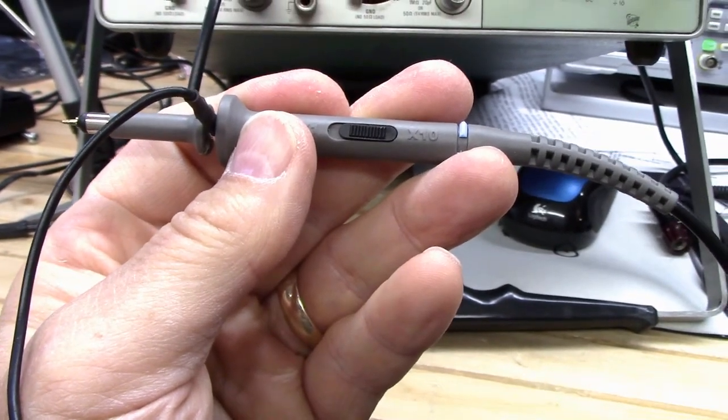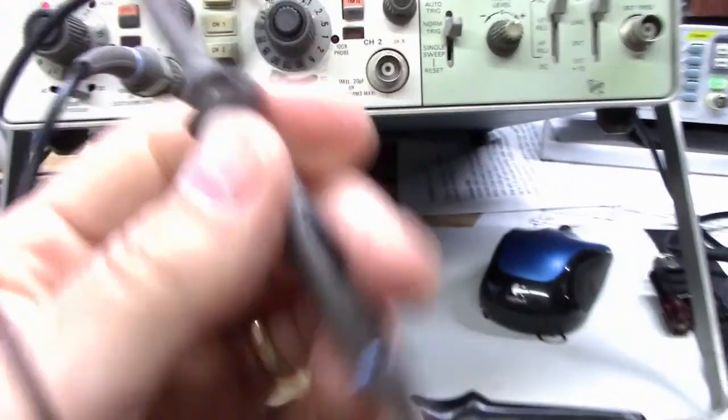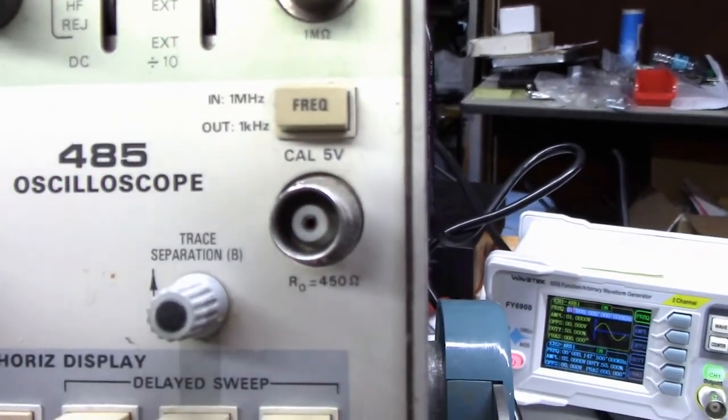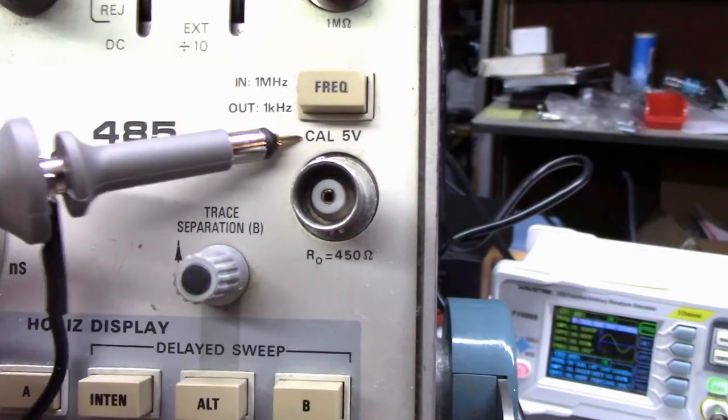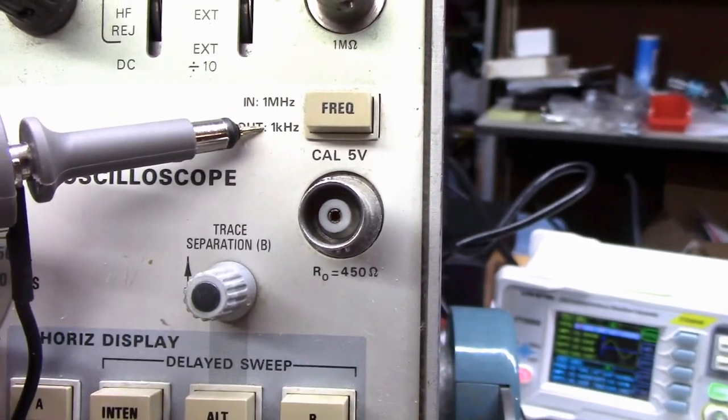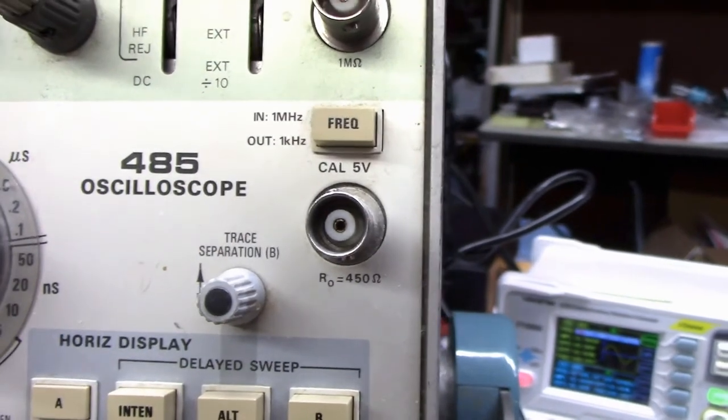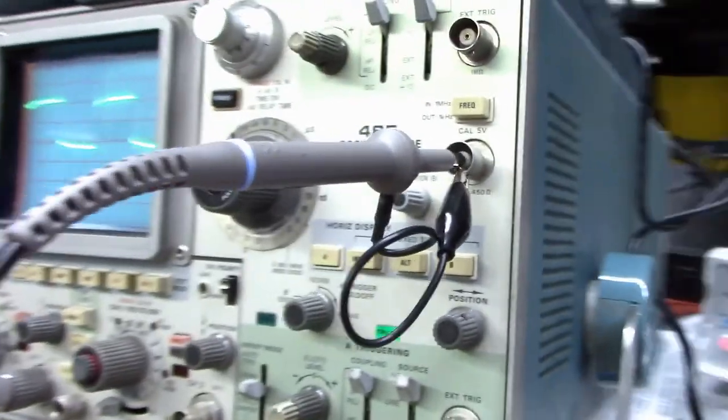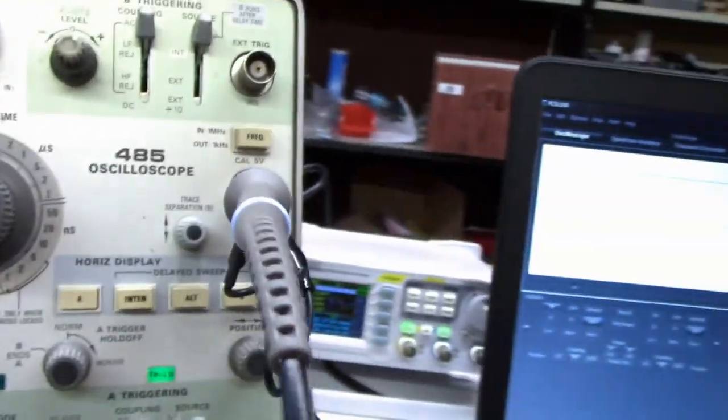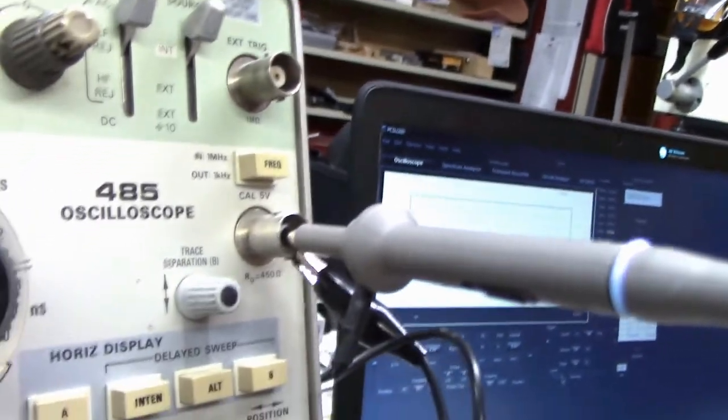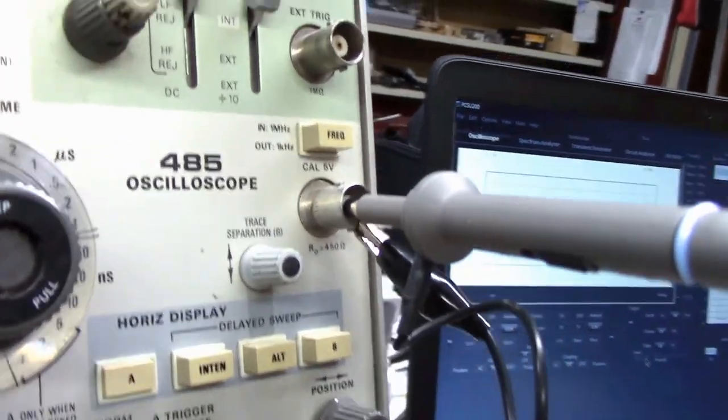Let's talk about how to compensate your probe so that it measures things the way it should. In my case I have a probe that can be either times one or times ten. If I'm going to use it in the times ten position, then I need to adjust the compensation so that it operates properly with my scope. To do that I use the scope cal output. Notice it is a five volt output and I have it set up for one kilohertz. Now my scope probe is connected up to my calibration output. I am expecting a five volt one kilohertz signal on the screen.